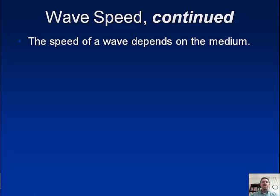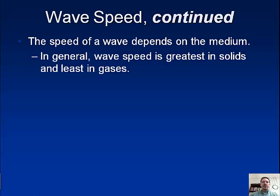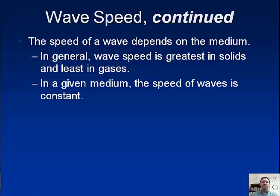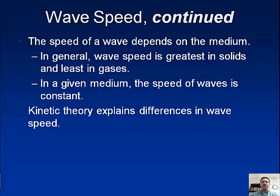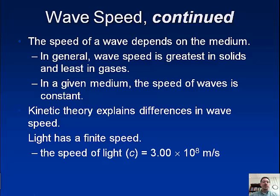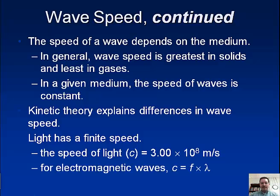So the wave speed can depend on the medium, so the substance that it's traveling through. Is it water? Is it air? Is it a solid surface like the table? So generally, the wave speed is greatest in solids and least in gases. So in a given medium, the speed of waves is constant. And then kinetic theory explains differences in wave speed. Light has a finite speed, so we can't change or adjust the speed of light. It's always constant. If this were able to change, then we'd have some issues with some other things. So speed of light is constant. We use the symbol lowercase c. So we have 3.00 times 10^8 meters per second. I think it actually is like 2.998 or something like that. So it's easy just to round it up so we have an easier number to deal with. So a really big number. It's really fast. And then we can talk about electromagnetic waves as well. So speed of light for an electromagnetic wave is equal to the frequency times the wavelength.